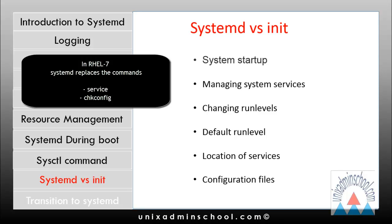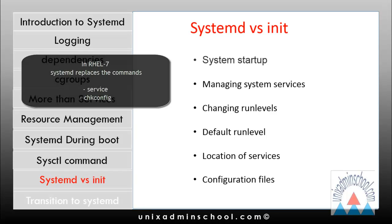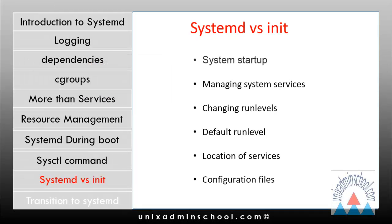Prior to Red Hat Enterprise Linux 7, the service command was used to start and stop services immediately, and the chkconfig command was used to identify at which run level a service would start or stop automatically. Although you can still use the service and chkconfig commands to start/stop and enable/disable services respectively, they are not 100% compatible with the RHEL 7 systemctl command. For example, non-standard service options such as those that start databases or check configuration files may not be supported in the same way.